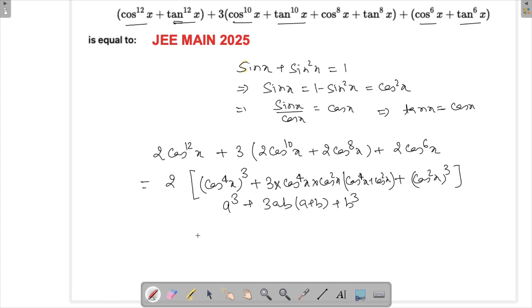So this expression is nothing but two times a plus b whole cube. This is a plus b whole cube. So we can say this is cos raised to the power 4x plus cos square x whole raised to the power 3.